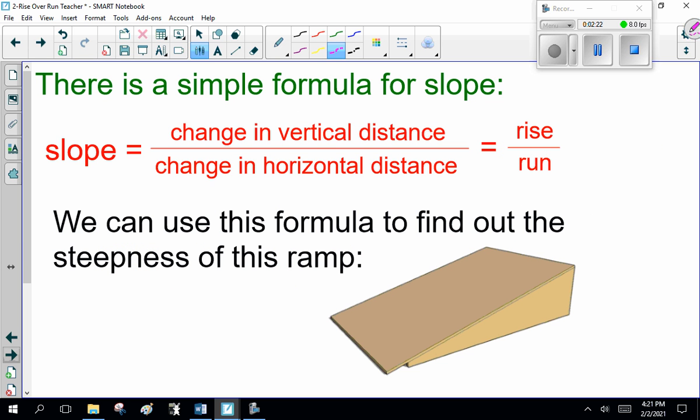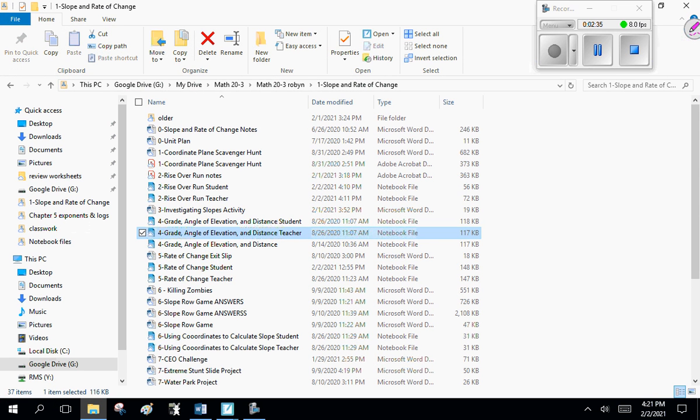Now, there is a simple formula for slope. Slope is change in vertical distance divided by change in horizontal distance, which is rise over run. We can use this formula to find out the steepness of a line.